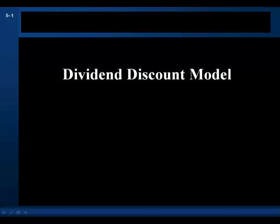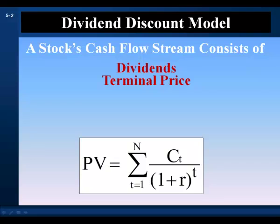The Dividend Discount Model. In competitive financial markets, the price of a financial asset will be equal to the present value of its expected cash flow stream discounted at its opportunity cost of capital. In this topic, we'll use the basic discounted cash flow valuation model to develop a model of common stock valuation, called the Dividend Discount Model.